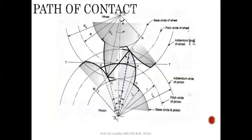Now here is a gear pair. The larger one is the wheel or gear, and the smaller one is the pinion. This is the addendum circle for the gear, this is the pitch circle, and this is the root circle or dedendum circle for the gear. Similarly, this is the addendum circle, pitch circle, and root circle or dedendum circle for the pinion.